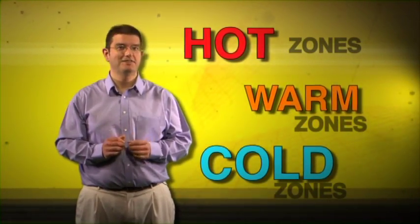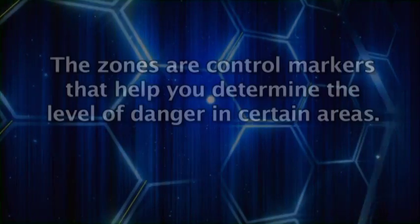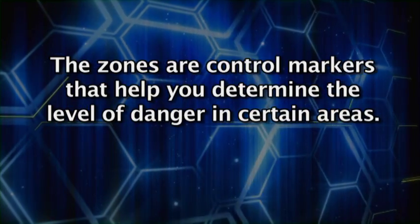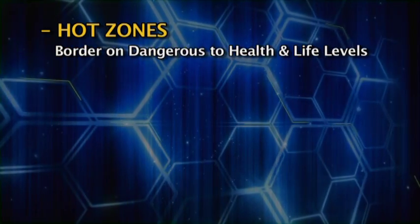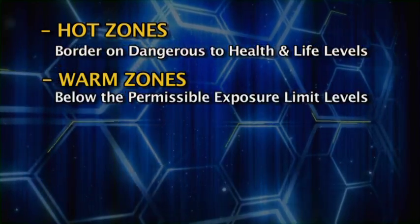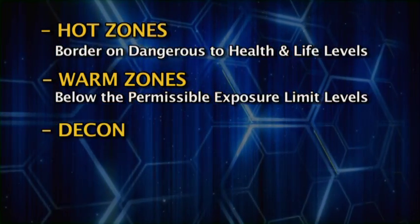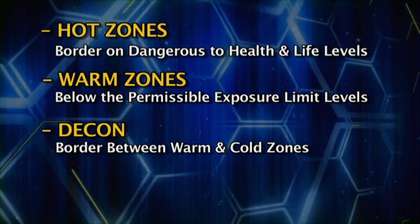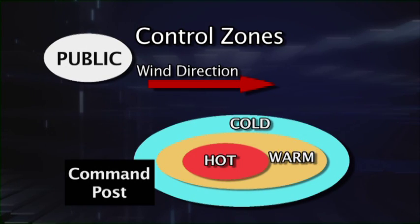What are the zones? They are control areas that help you determine the level of danger and where people can go. Hot zones border on immediately dangerous to health and life levels. Warm zones edge below the permissible exposure limits or threshold limit values. Decon is not really a zone but rather the border between the warm and cold zones. Cold zones are non-exposure areas.